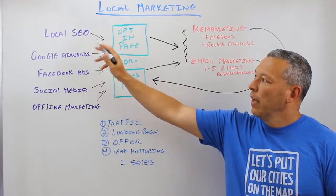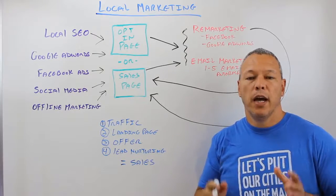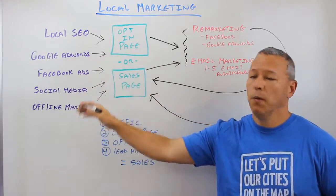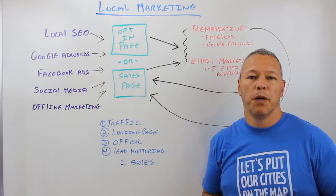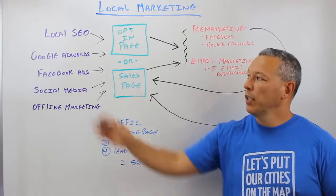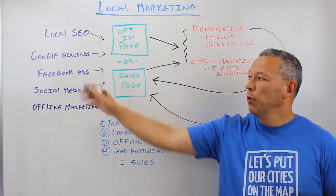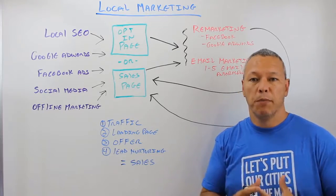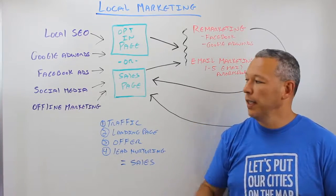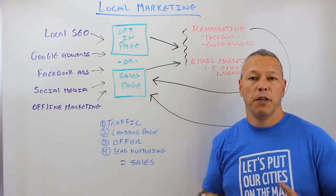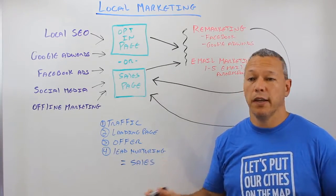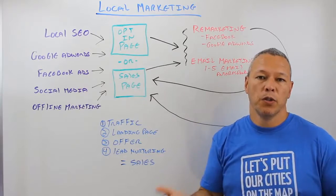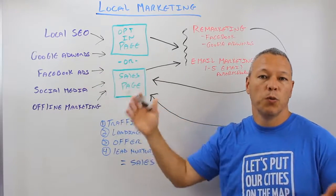The first thing we're going to talk about is traffic. Depending on your business, your skill set, experience, and your market, you're probably not going to do all of these, but you may do some. You may do local SEO, optimizing your website and creating content to attract your ideal local customer. You can do Google AdWords or Facebook ads to target exactly who you're trying to sell to. You can do social media, or you can do offline marketing — print ads, postcards, newspapers, radio ads — direct them to your website and it works exactly the same way.